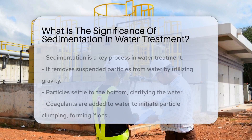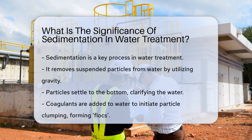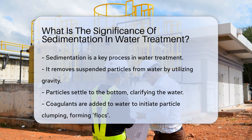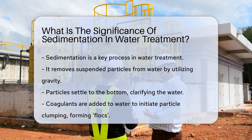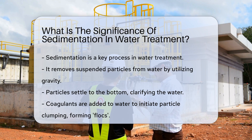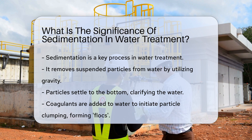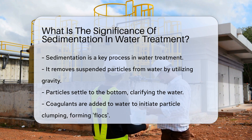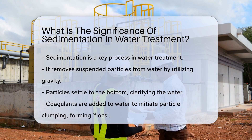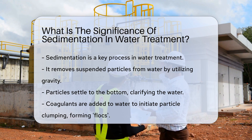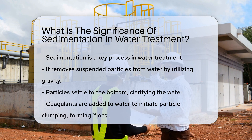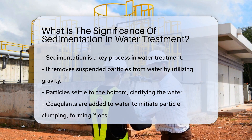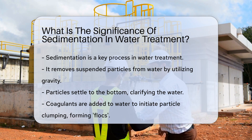Imagine a glass of water straight from a river. It's murky, right? That's where sedimentation steps in. Sedimentation is a water treatment process that helps to remove suspended particles from water. Think of it like a settling game gravity plays — heavier particles in water fall to the bottom over time. This natural process is harnessed in water treatment.